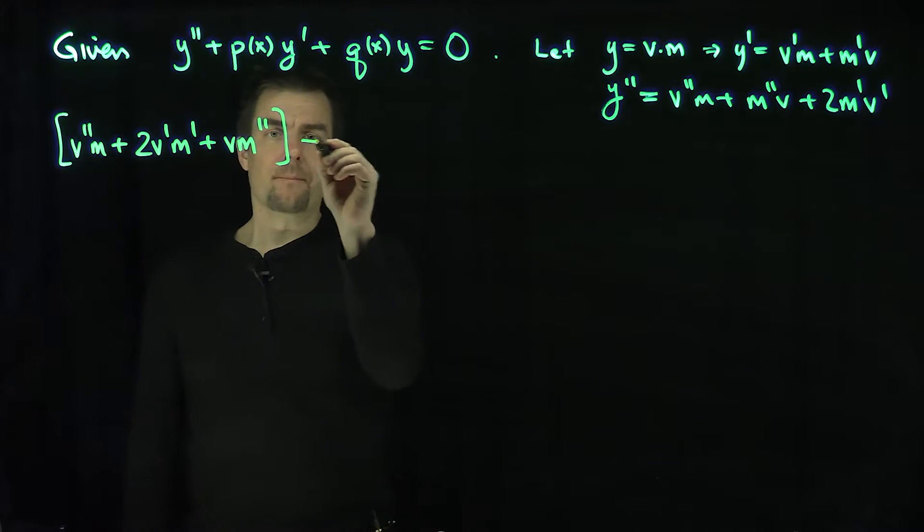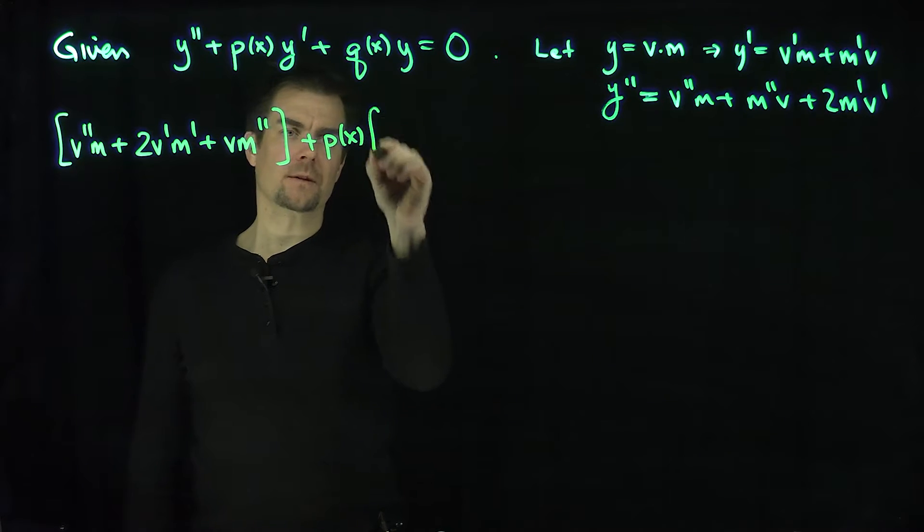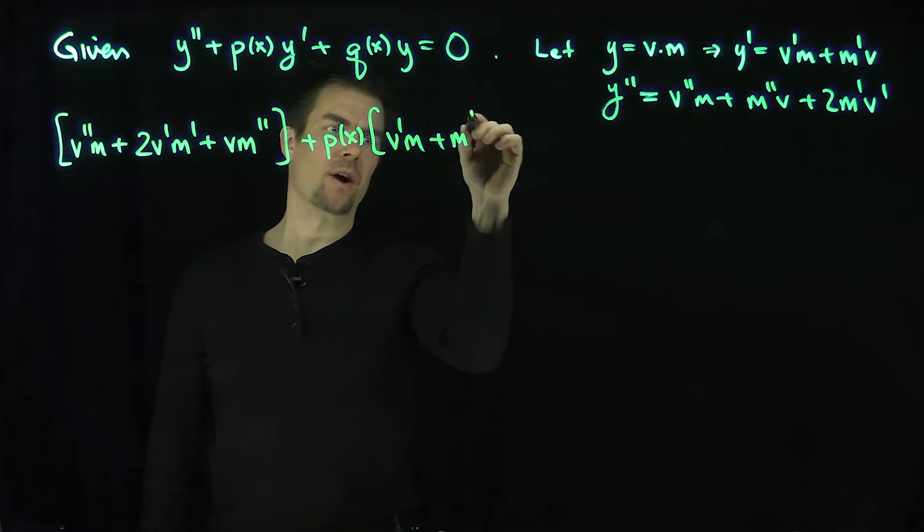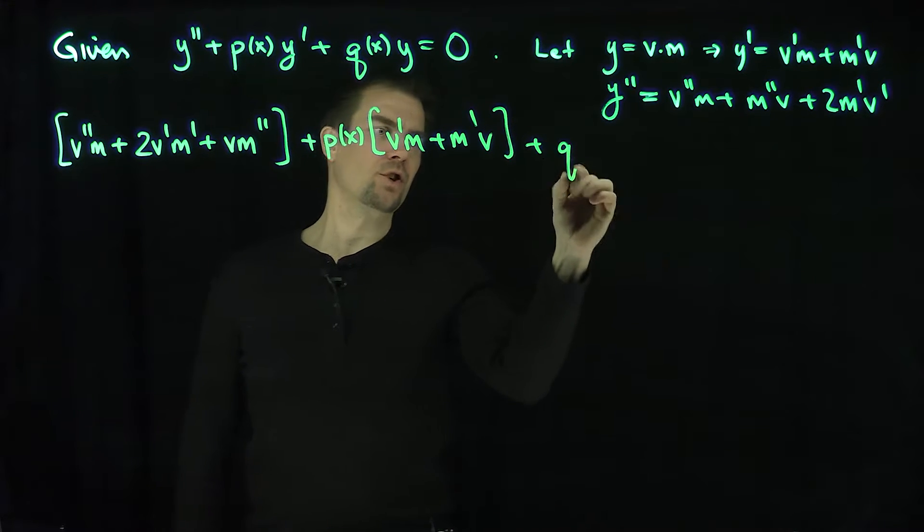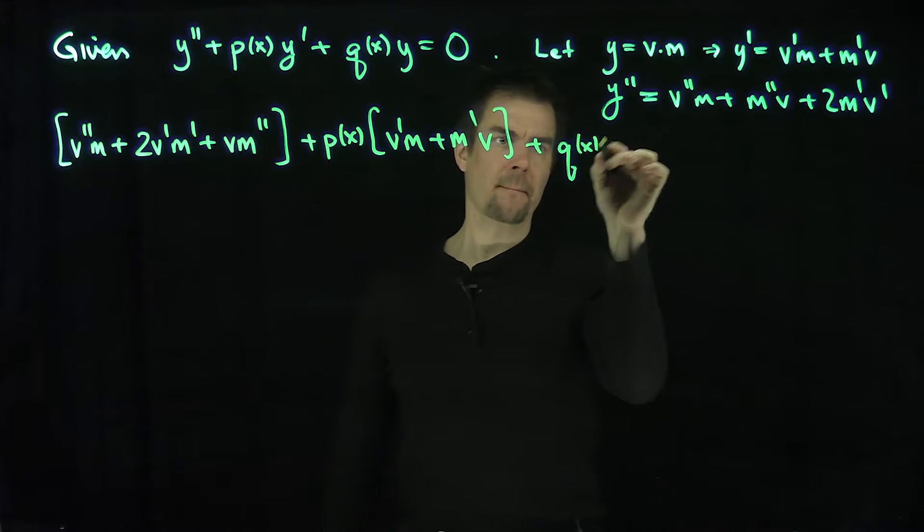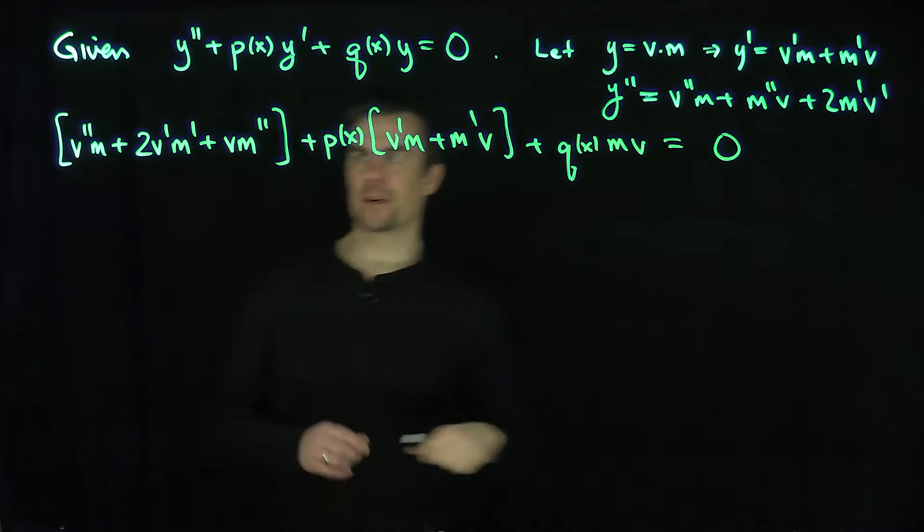That's our y double prime plus p of x times v prime m plus m prime v plus q of x times m v is equal to zero.